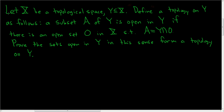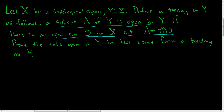Let X be a topological space and Y a subset of X. We're going to define open sets as follows: a subset A of Y is open in Y if there is an open set O in X such that A equals Y intersected with O. So we're defining what it means for a set to be open in Y, and we're going to prove that with this definition of open sets we do have a topology on Y. This is called the subspace topology.